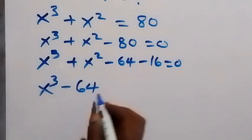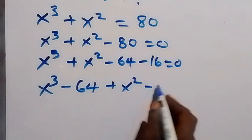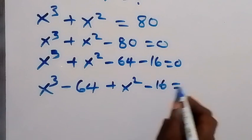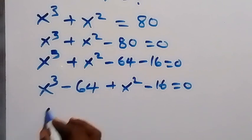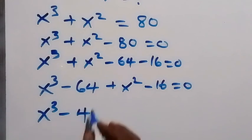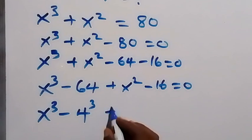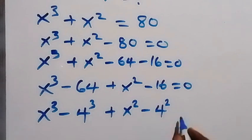We have x³ − 64 plus x² − 16 = 0. We can express 64 as 4³, since 4 × 4 × 4 = 64, giving x³ − 4³. And we can express 16 as 4², since 4 × 4 = 16, giving x² − 4² = 0.